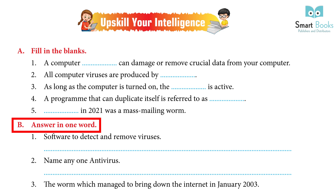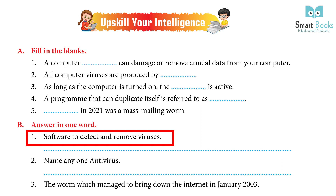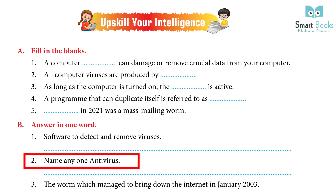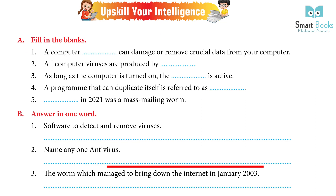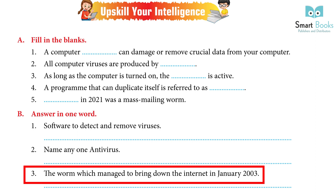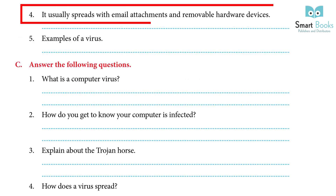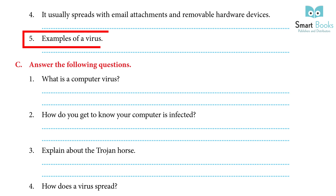Answer in one word: 1. Software to detect and remove viruses. Answer: Antivirus. 2. Name any one antivirus. Answer: Norton Security. 3. The worm which managed to bring down the internet in January 2003. Answer: Slammer. 4. It usually spreads with email attachments and removable hardware devices. Answer: Trojan horse. 5. Examples of a virus. Answer: Zero Access, Zeus, Beast.